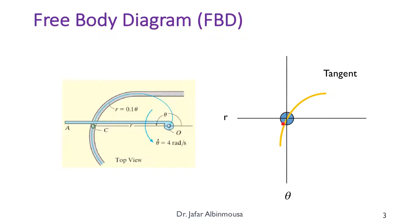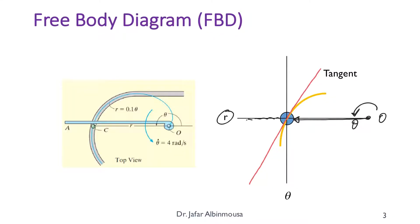Here we represent particle C with a blue ball and its path with an orange curved path. The tangent is shown here. The origin is located such that the rotation goes in this direction. Extending the position vector gives the radial direction, and perpendicular to it we have the transverse direction theta. It is just a coincidence that these two happen to be along the horizontal and vertical at this instant — this coordinate system can rotate.